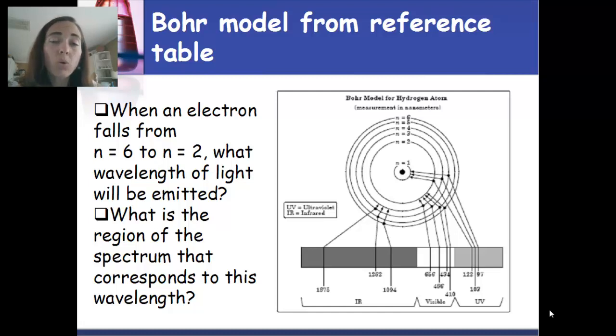Now the second question is what region of the spectrum would that light correspond to? Well 410 nanometers, if you look on the very bottom of this picture, is the visible spectrum. So 410 nanometers would be part of the visible spectrum.